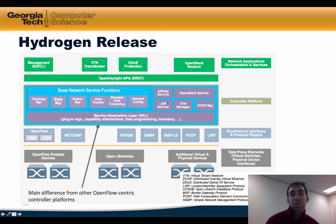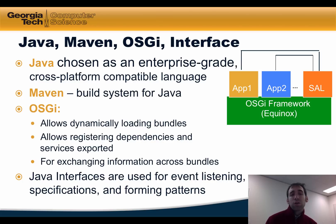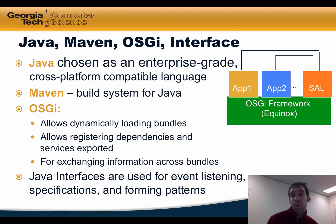The controller platform implements various basic services on top of the SAL, and on top of the controller itself, one can use the OpenDaylight REST APIs to write more complex network applications for orchestration and network services. The OpenDaylight ecosystem has many moving parts. The controller is written in Java, chosen as an enterprise-grade, cross-platform compatible language. OpenDaylight uses Maven as a build system, and we'll see that in the demonstration. It also uses OSGI to allow the controller to dynamically load bundles, automatically register dependencies and services, and exchange information across bundles. We'll look at an example of how OSGI allows dynamic loading of bundles in the demonstration of the MAC learning switch.